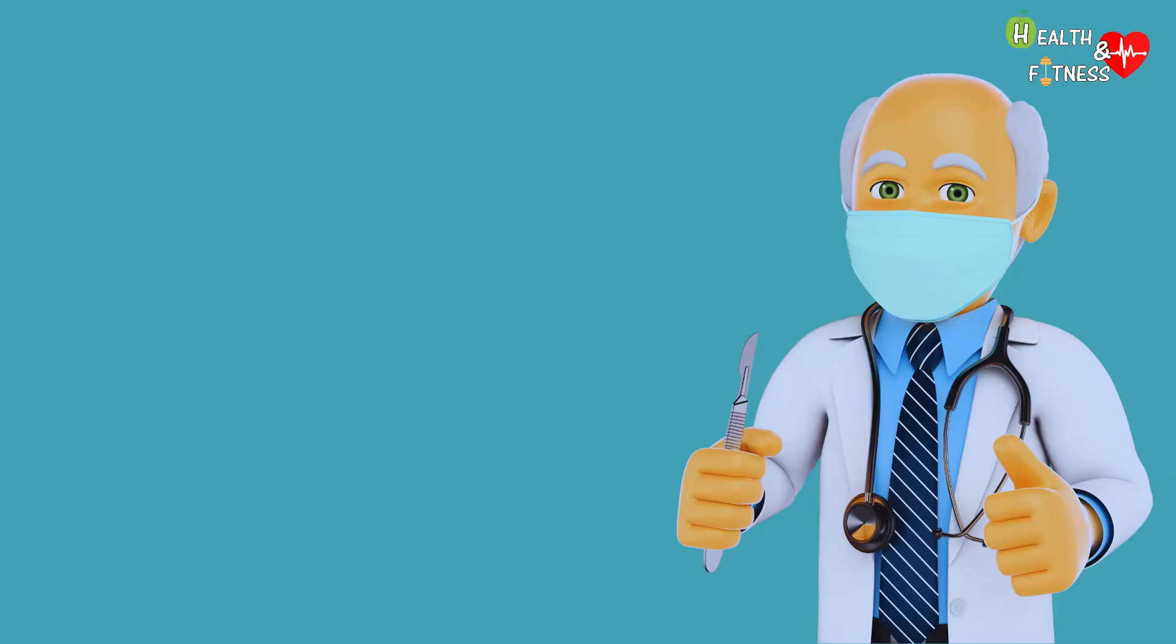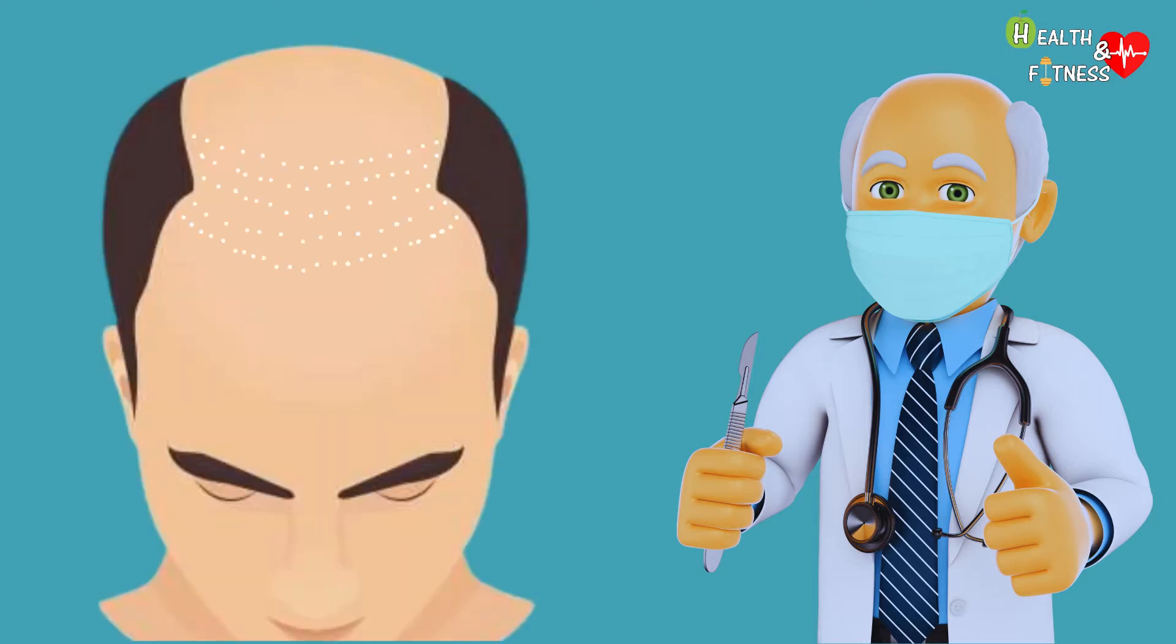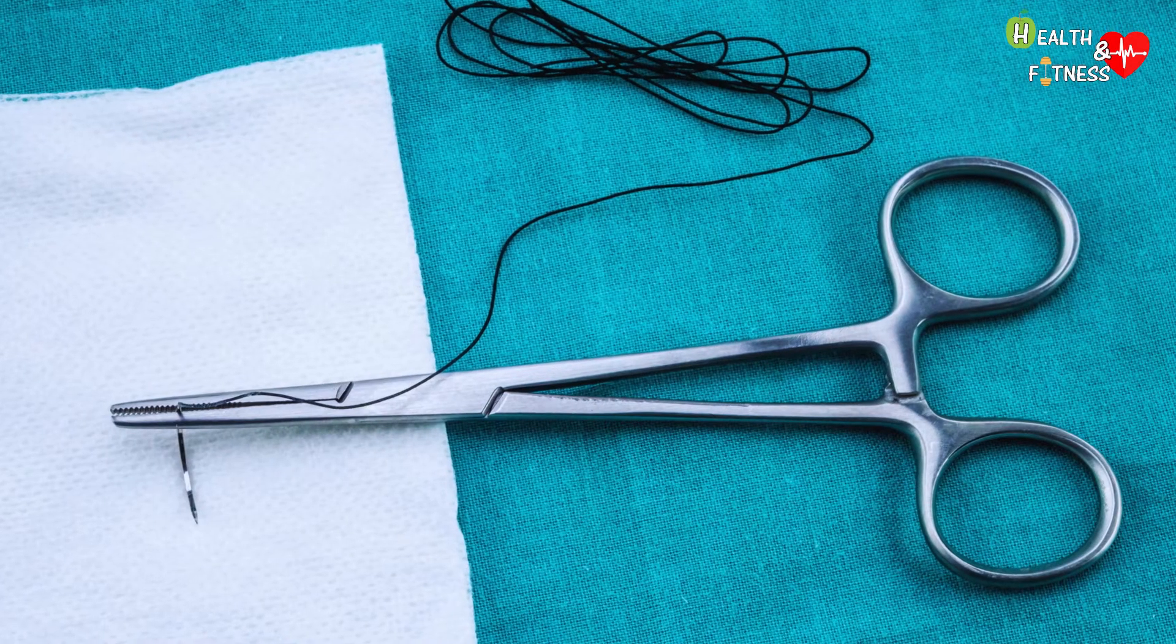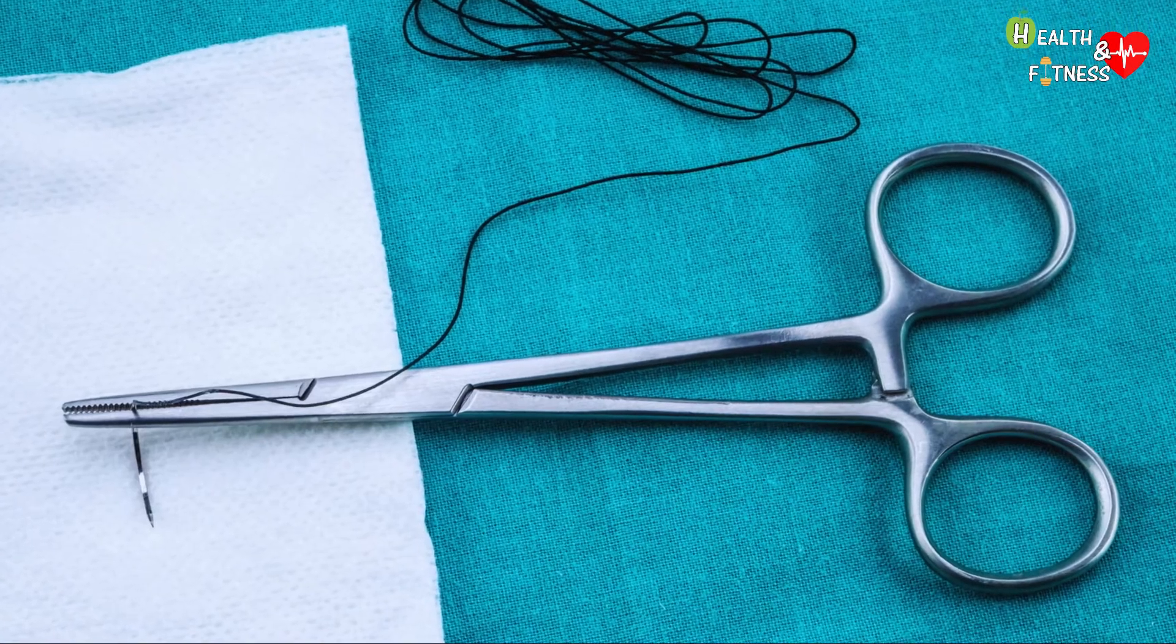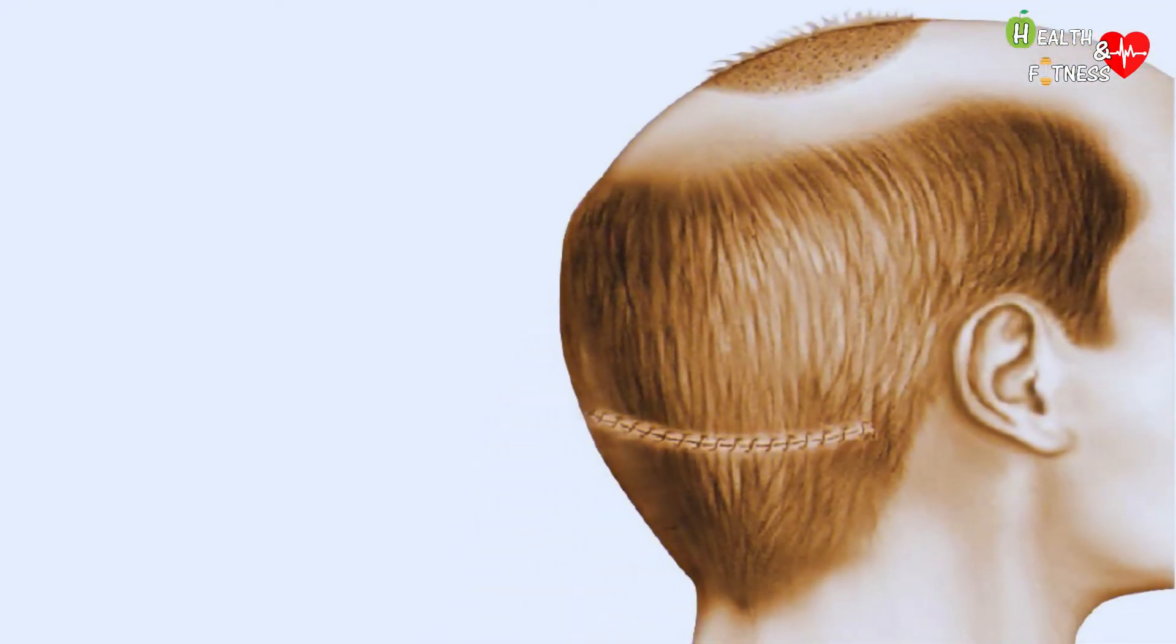Subsequently, the surgeon uses micro blades or very small needles to puncture the recipient area. The new follicular units that have been selected will then be implanted here. Finally, sutures are applied and the result will be a very thin scar at the donor area.